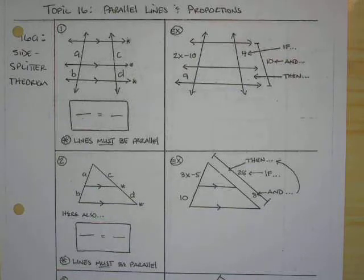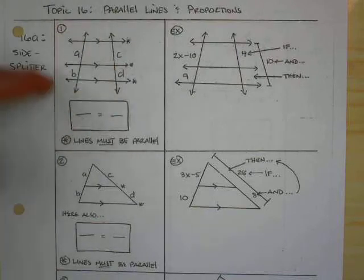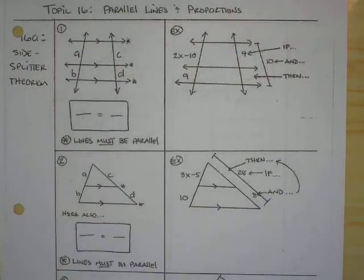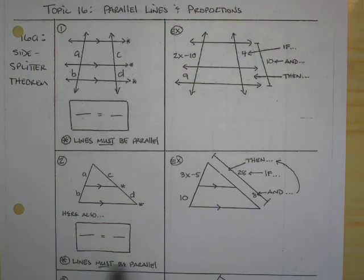Basically what we have, if you look at the diagram here, is a couple of sides, these two segments, that have been split into smaller segments by a couple of parallel lines. You can see that these are parallel based on the arrows that we've got right here. That's an important thing for us to keep in mind. Remember that in order for the Side Splitter Theorem to work, the lines that you have that are splitting your sides have to be parallel.